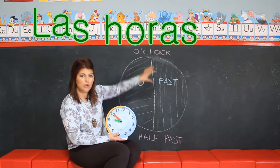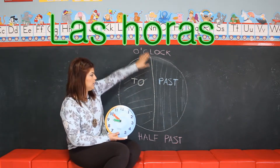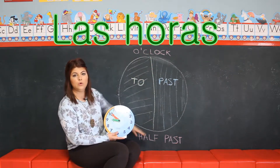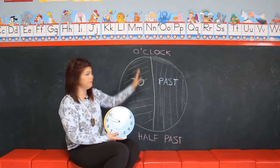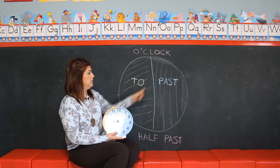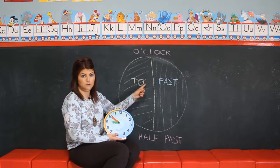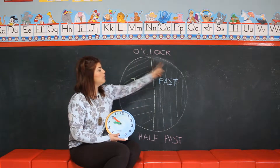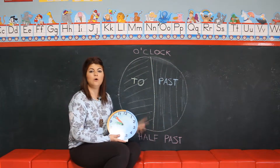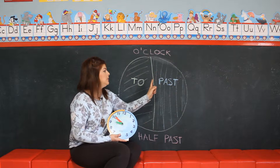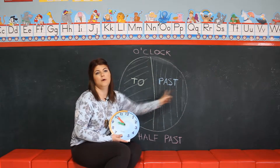When we have the long hand on the left, we use 'to', and when we have it on the right, we use 'past'.